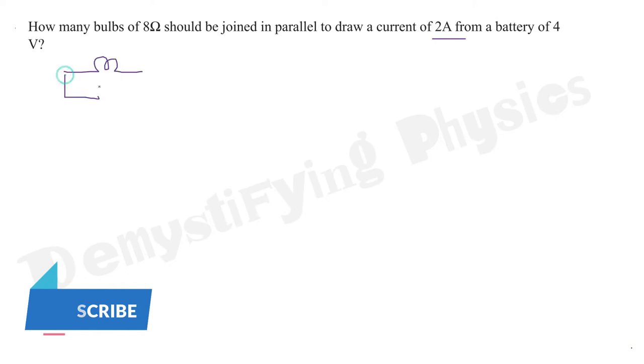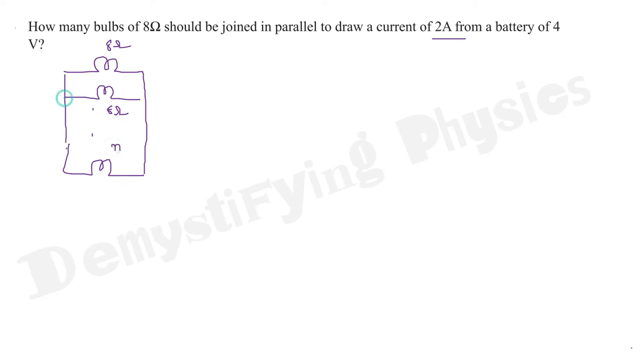8 ohm bulbs, how many bulbs should be connected in parallel? Let N bulbs be connected in parallel. And it is connected to 4 volt battery. The total current drawn is 2 ampere.